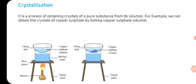Now we will talk about crystallization. Crystallization ek physical process hai, aur ismein hum kisi substance ke pure form ko — jo ki solution ke form mein hoti hai — usse hum solid crystals prepare karte hai, aur ishi process ko hum crystallization kehte hai. It is a process of obtaining crystals of a pure substance from its solution. For example, we can obtain the crystals of copper sulfate by boiling copper sulfate solution. Copper sulfate ke solution ko agar hum boil karayen, toh phir hum dekhte hai ki usmein se water jo hota hai woh evaporate ho jaata hai, aur copper sulfate jo hota hai woh solidify ho jaata hai crystals ke form mein — aur ishi ko hum crystallization kehte hai. Ismein sirf state of matter hi change hota hai — liquid se solid ban jaata hai — toh ye ek tariqe ka physical change hai, aur ye ek reversible change hota hai.